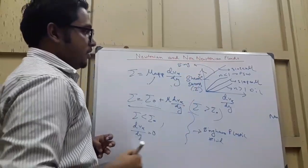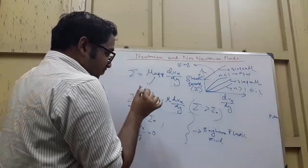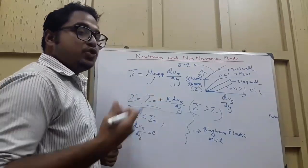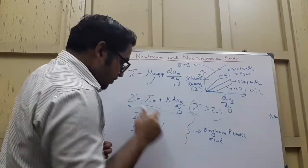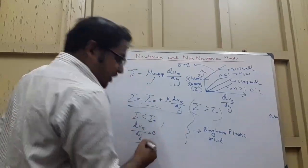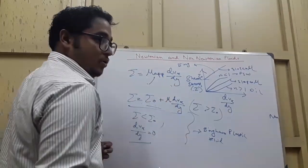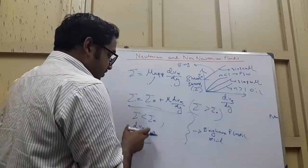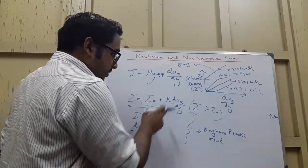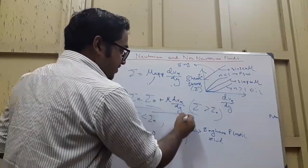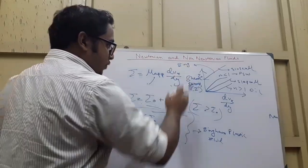On the graph, Bingham plastic starts at tau_0 on the tau axis, then rises linearly with slope mu. The classic example is toothpaste: before you apply a certain shear stress, there is no shear strain rate and no motion. But after a certain shear stress is applied, it behaves as a Newtonian fluid. That is the Bingham plastic fluid.